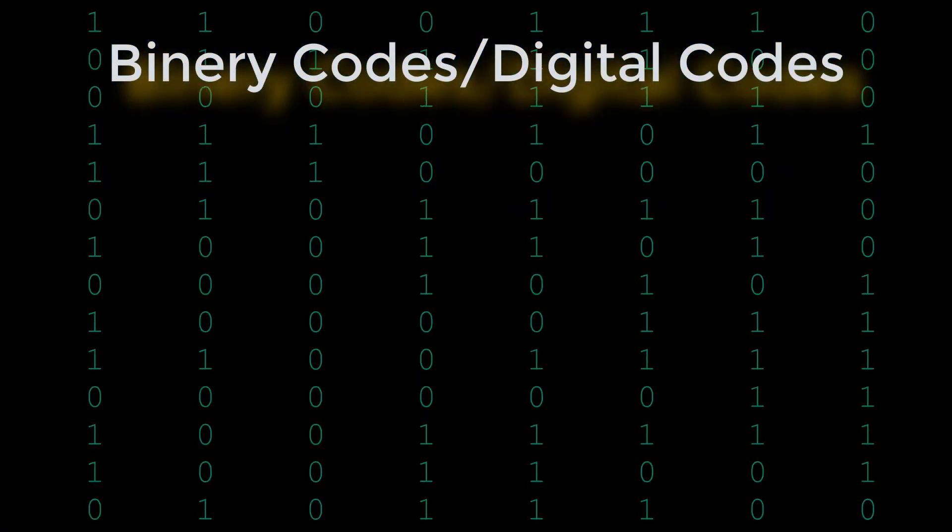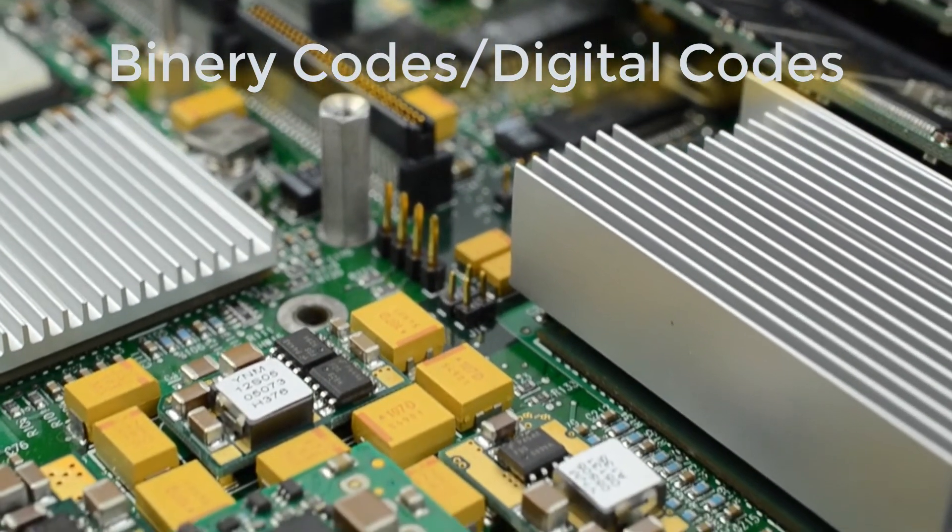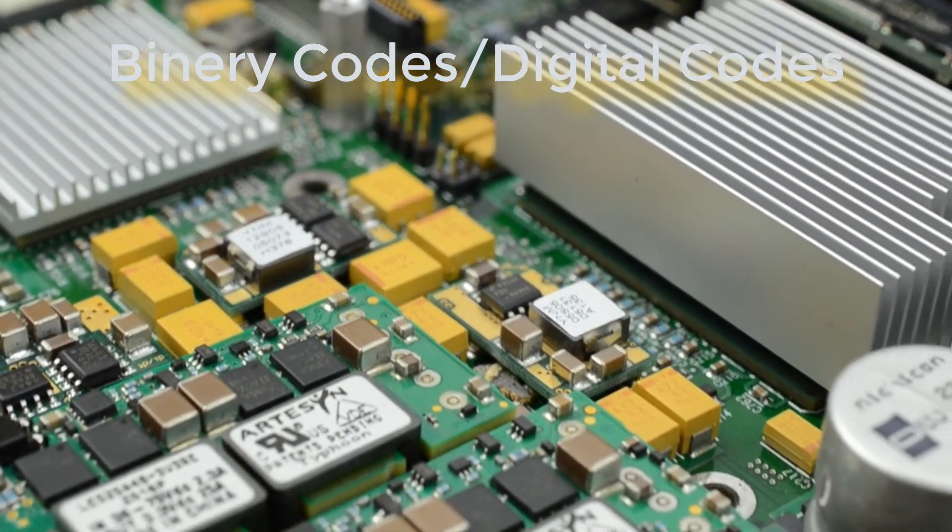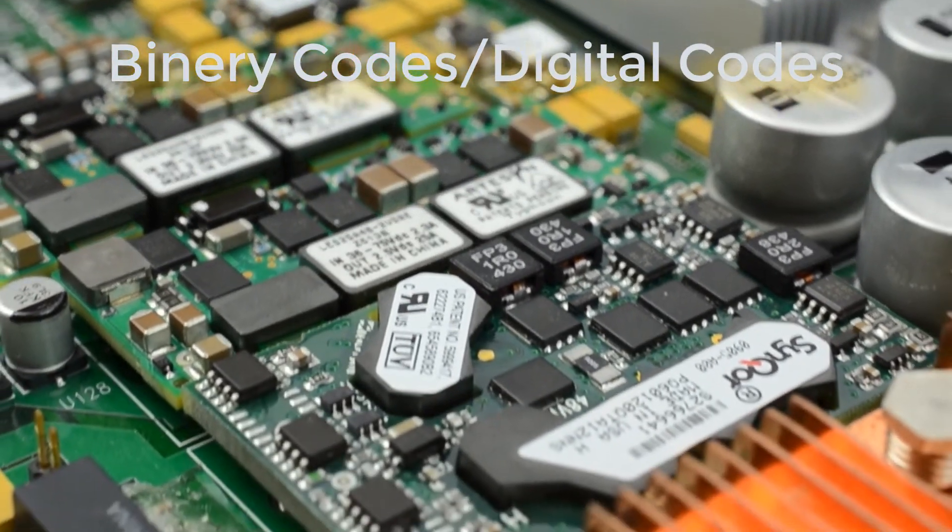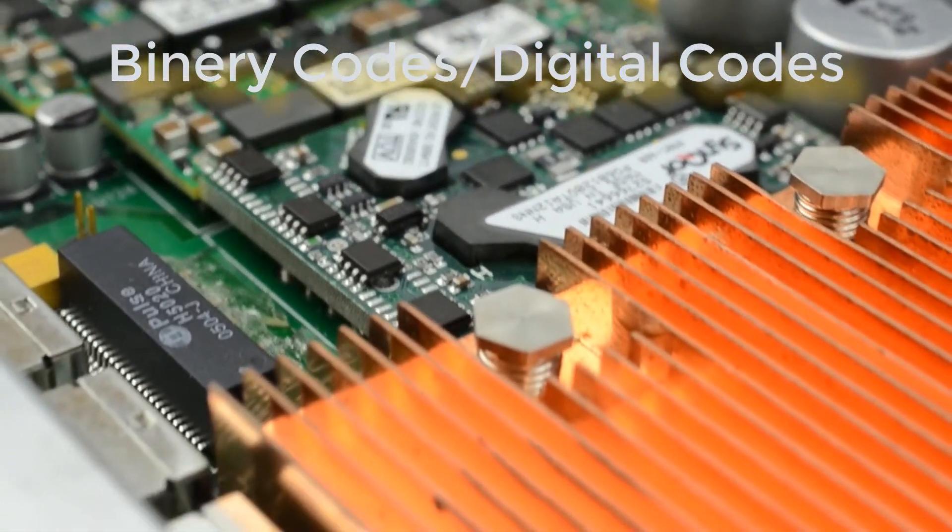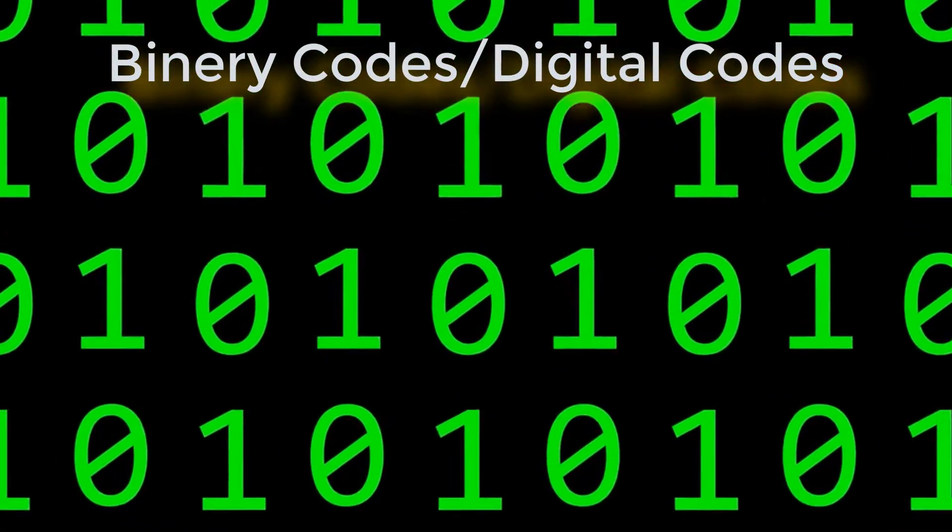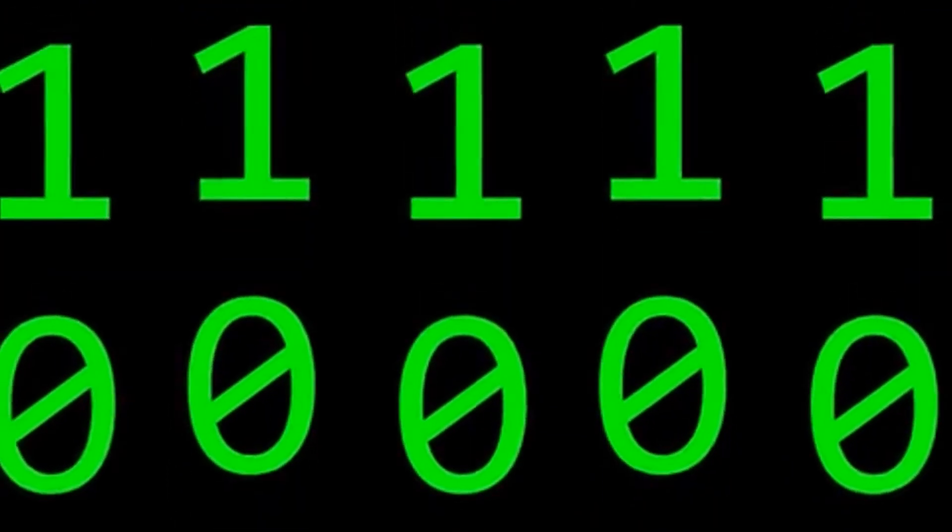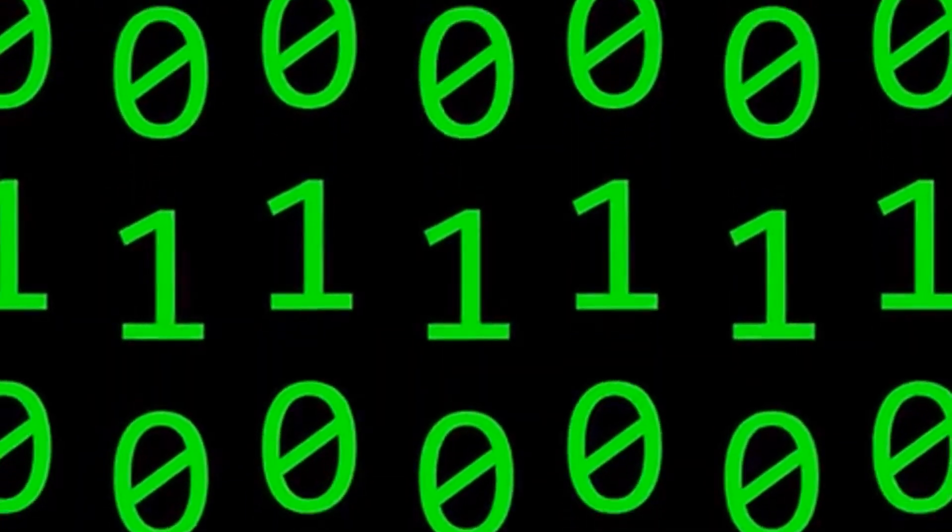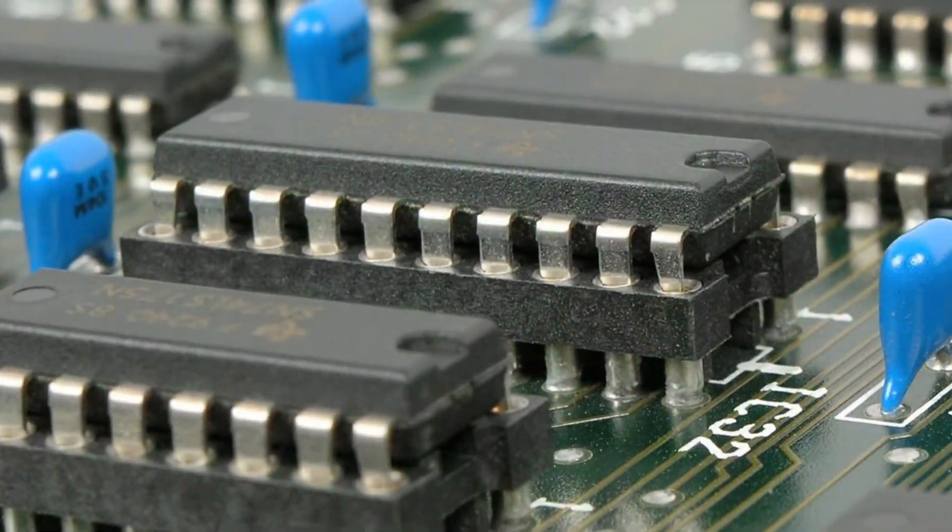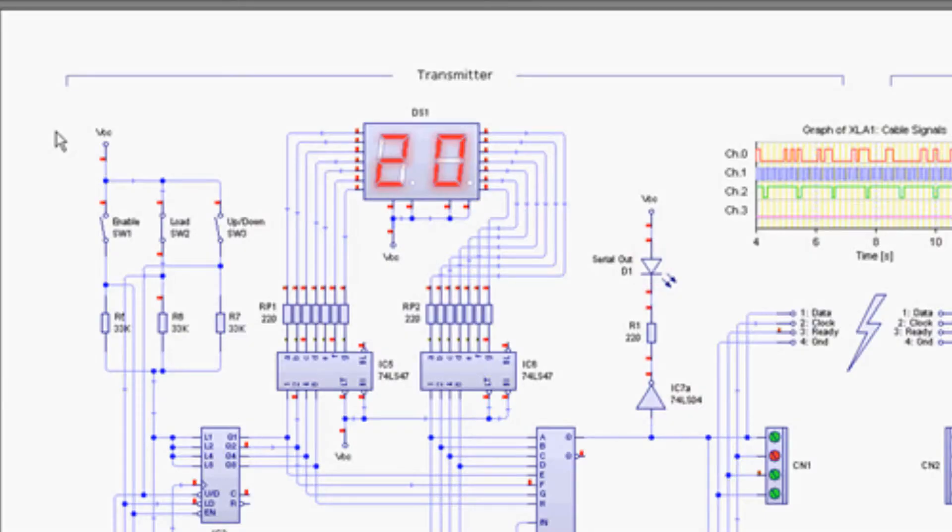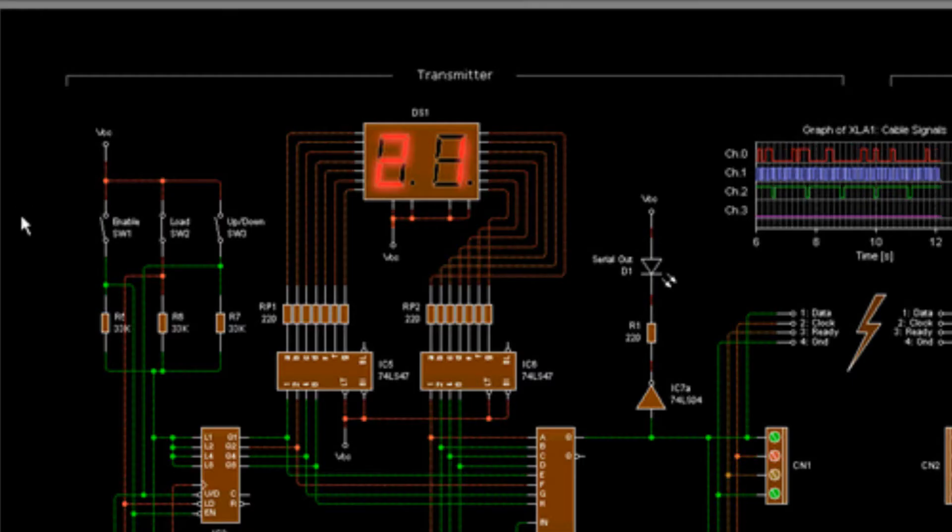Binary codes or digital codes: binary code is code used in digital computers based on a binary number system in which there are only two possible states, off and on, usually symbolized by zero and one. So the components or devices that process through digital codes are called digital components, and the study of such components is called digital electronics.